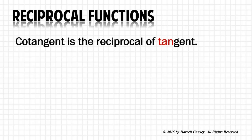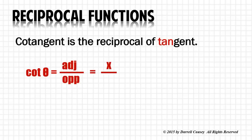Cotangent is the reciprocal of tangent. Take your tangent, which is opposite over adjacent, flip it over and you have x over y.